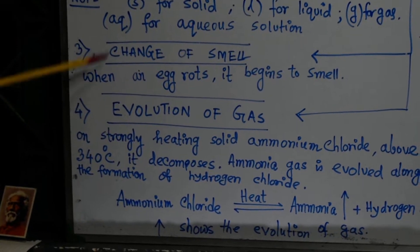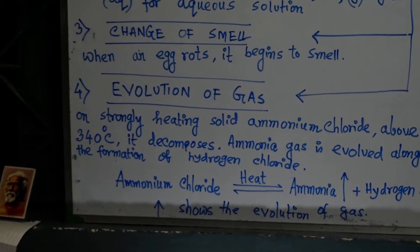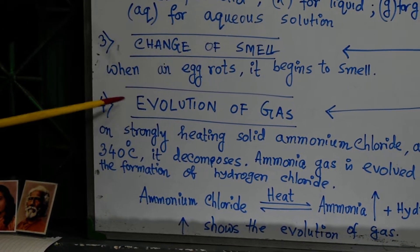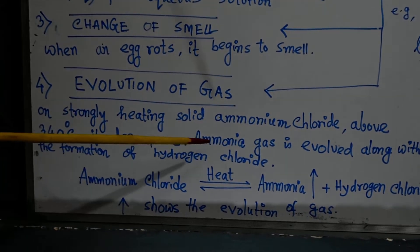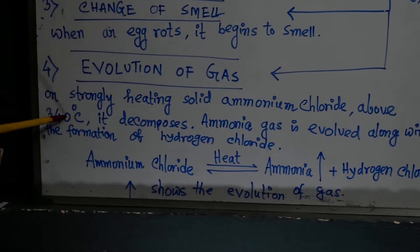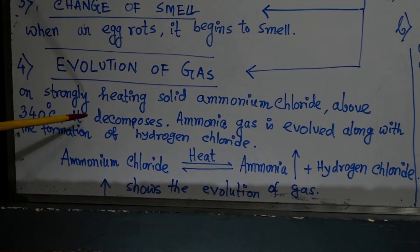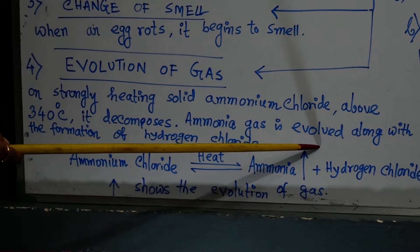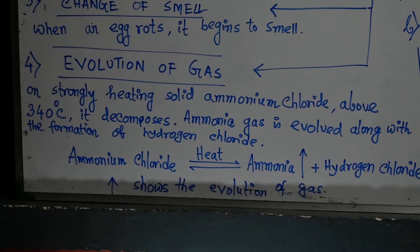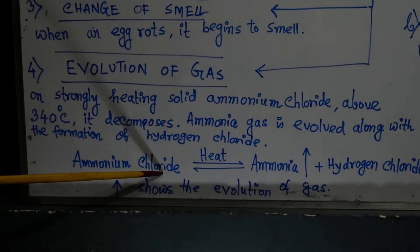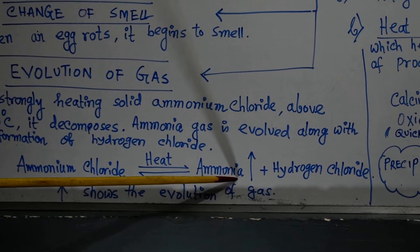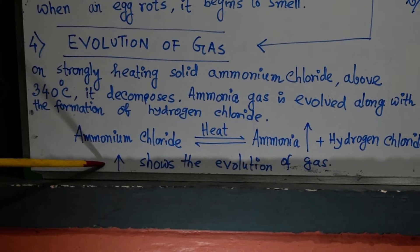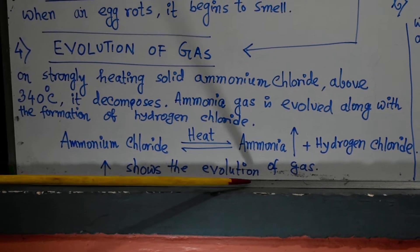The next characteristic of chemical reactions is the evolution of gas. In some chemical reactions, a gas is evolved along with the products formed. For example, on strongly heating solid ammonium chloride above 340 degrees centigrade, it decomposes. During this decomposition, ammonia gas is evolved along with the formation of hydrogen chloride. The word equation is: ammonium chloride → ammonia gas + hydrogen chloride. Please note: the arrow pointing upwards shows the evolution of gas.